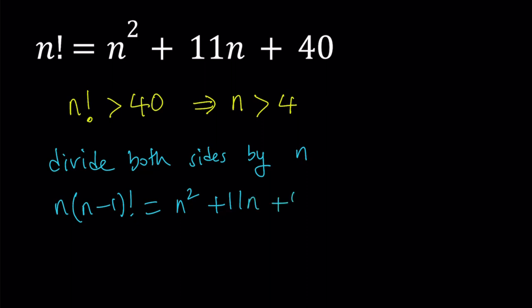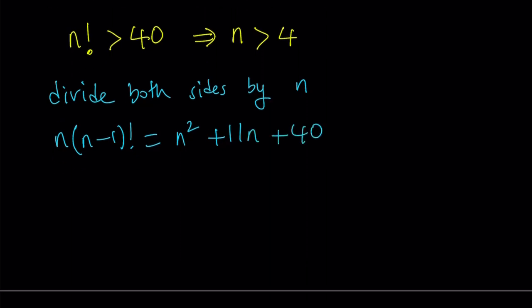And then I'm going to divide everything by n. When I do, I'm going to get n minus 1 factorial, which is an integer. n squared divided by n is n. This is going to give me 11. The constant term is going to be 40 divided by n. Now I've noticed that everything here is an integer. How about 40 over n? That's an integer too. But isn't that unusual? Well, not necessarily. This must be an integer. Therefore, n divides 40.